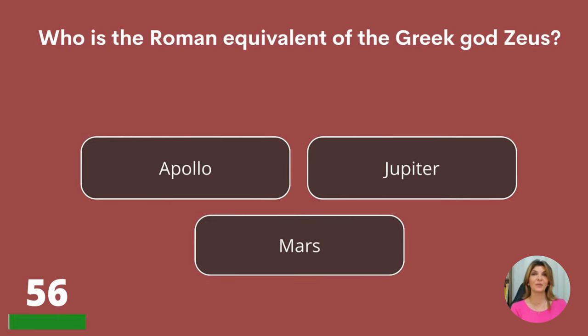Who is the Roman equivalent of the Greek god Zeus? Apollo, Jupiter, or Mars? Jupiter.